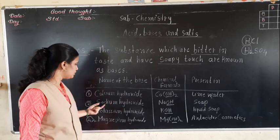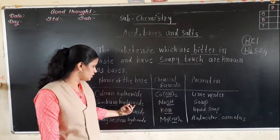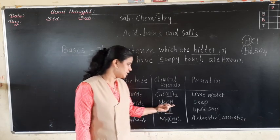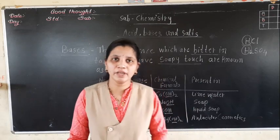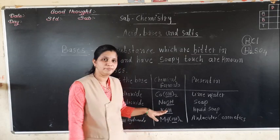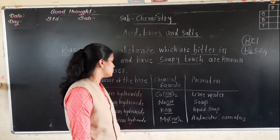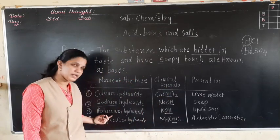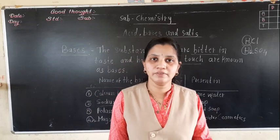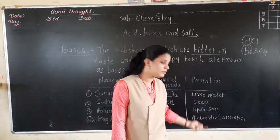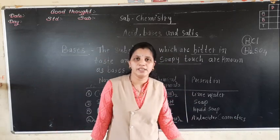The second example of base is sodium hydroxide. Sodium — you all know the symbol of sodium is Na, and hydroxide group OH is added. So NaOH is the chemical formula of sodium hydroxide, and it is present in soap. The third is potassium hydroxide: K means potassium and OH is the hydroxide group, so KOH is the chemical formula of potassium hydroxide, and it is present mostly in liquid soap.